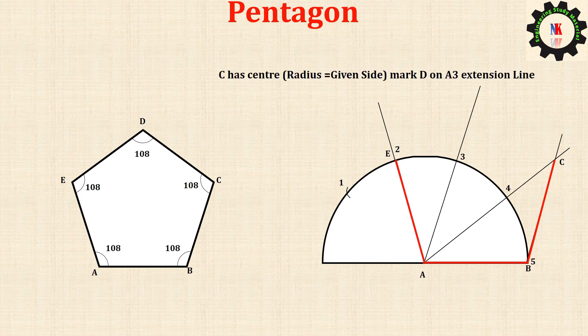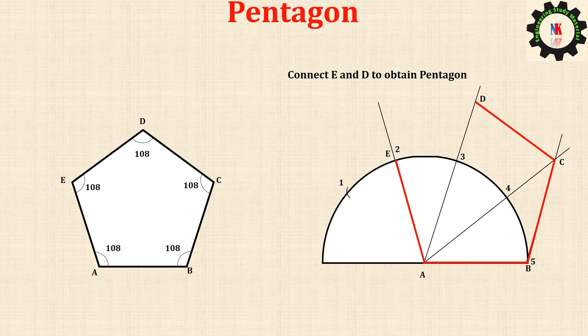C as center with radius equal to given side, mark D on A3 extension line. Connect E and D to obtain the pentagon.